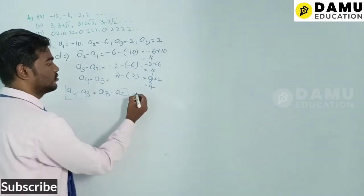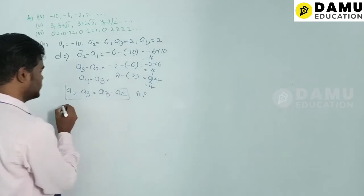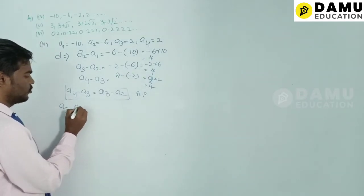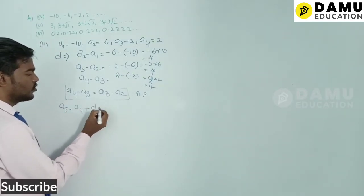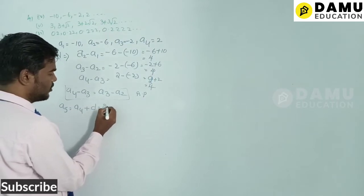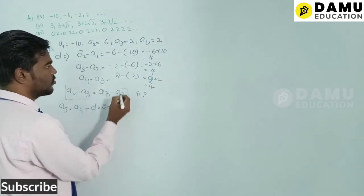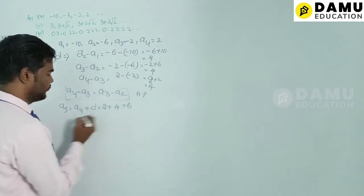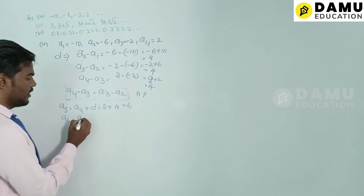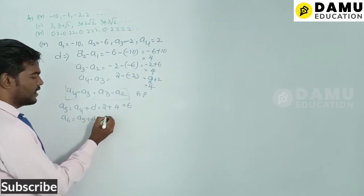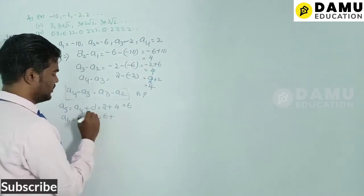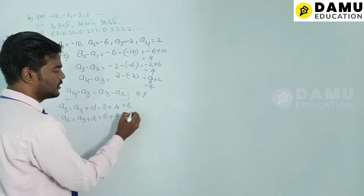Since it is in AP, a5 = a4 + d = 2 + 4 = 6. Then a6 = a5 + d = 6 + 4 = 10.